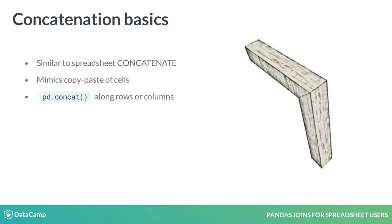In Pandas, we use the Pandas concat function to concatenate data frames. The function allows us to join two or more data frames along either rows or columns.